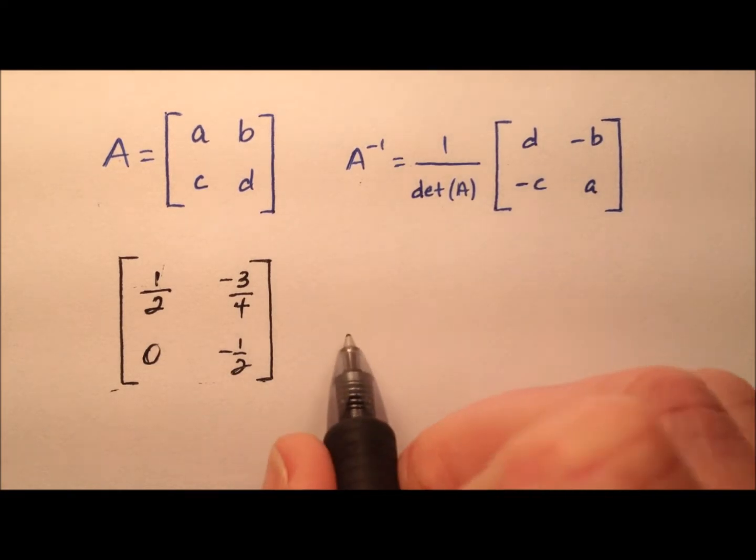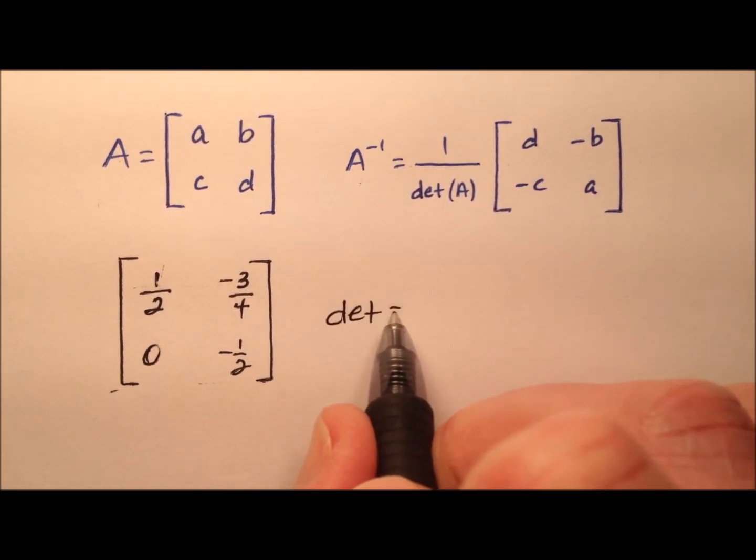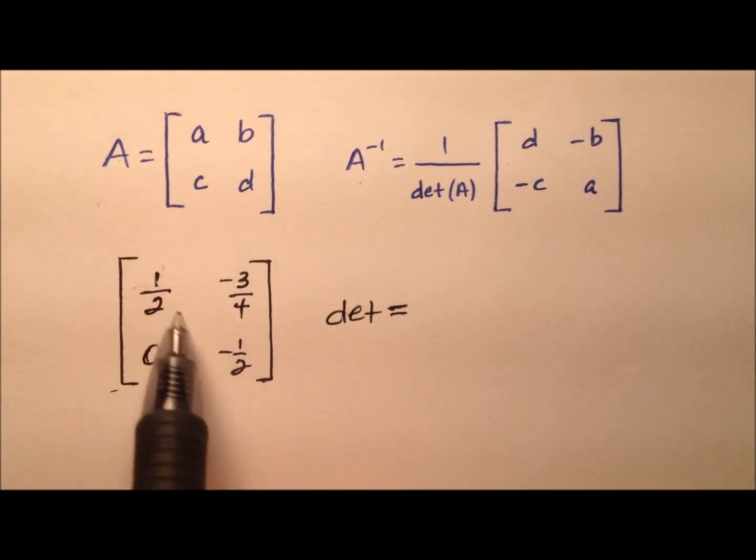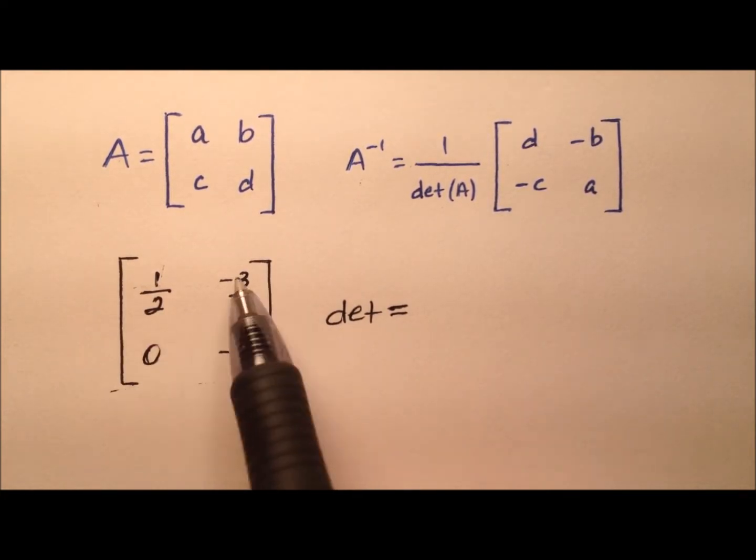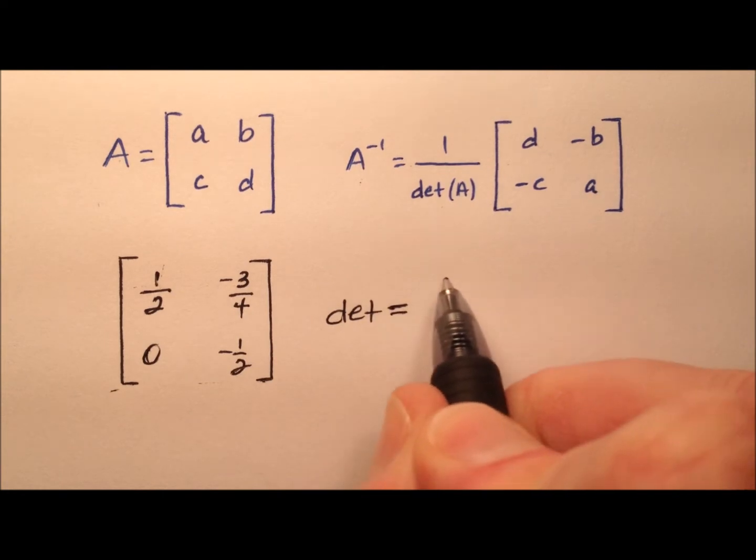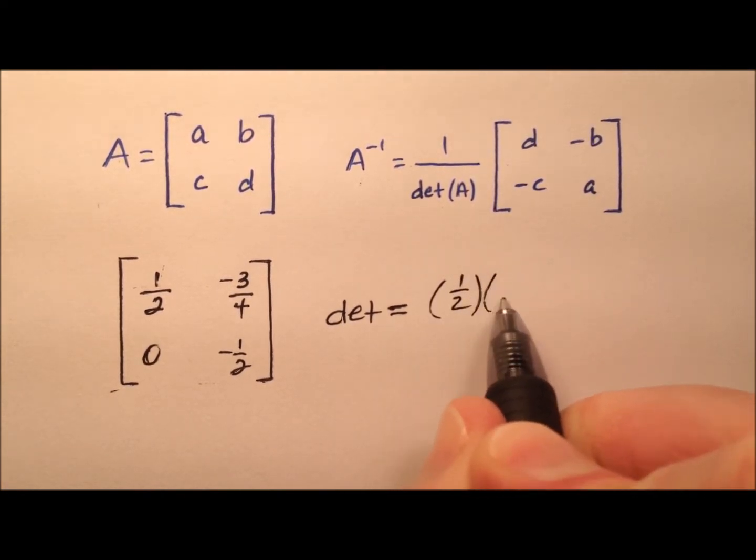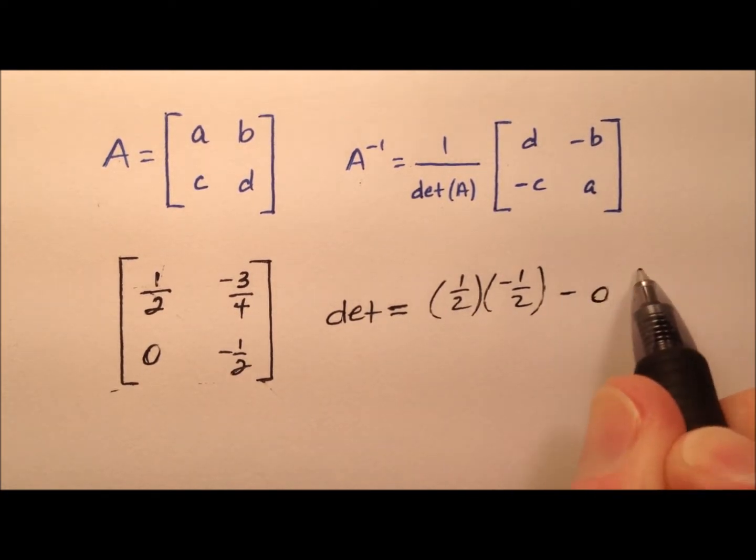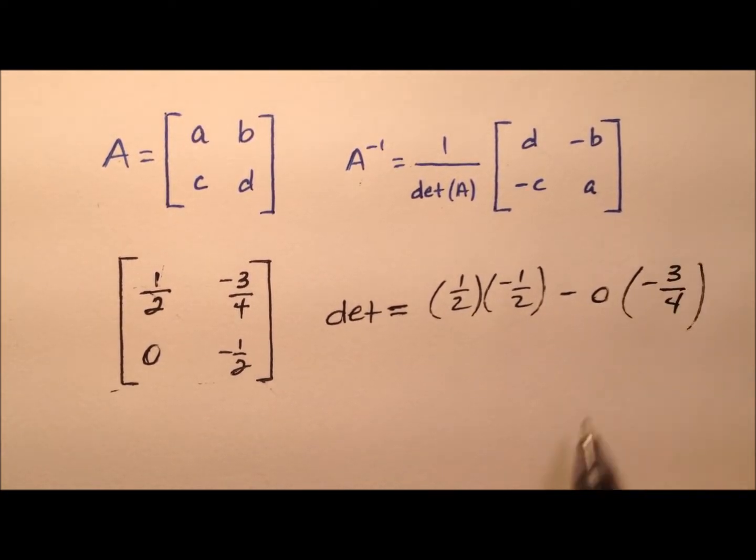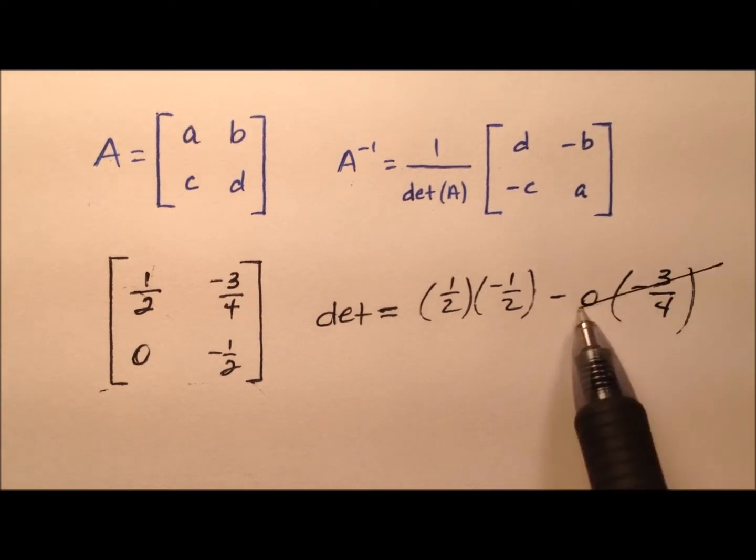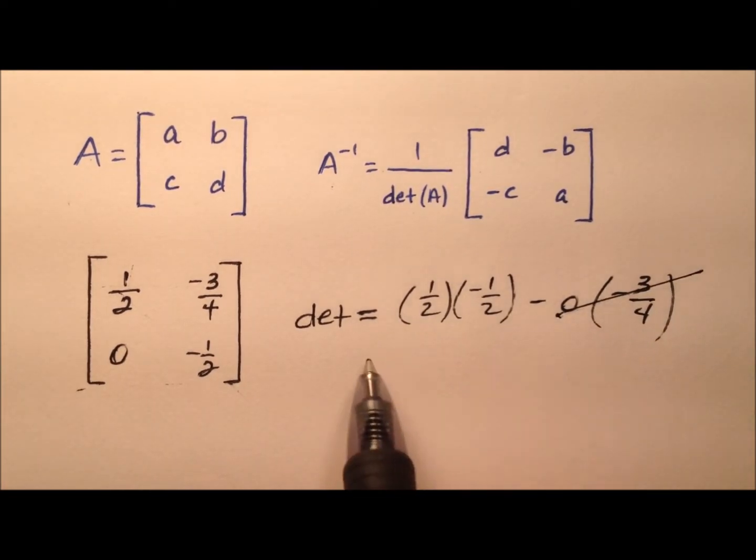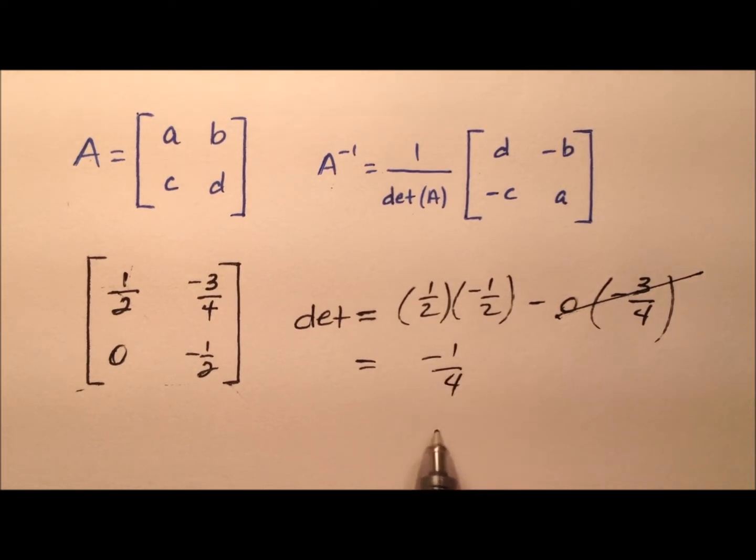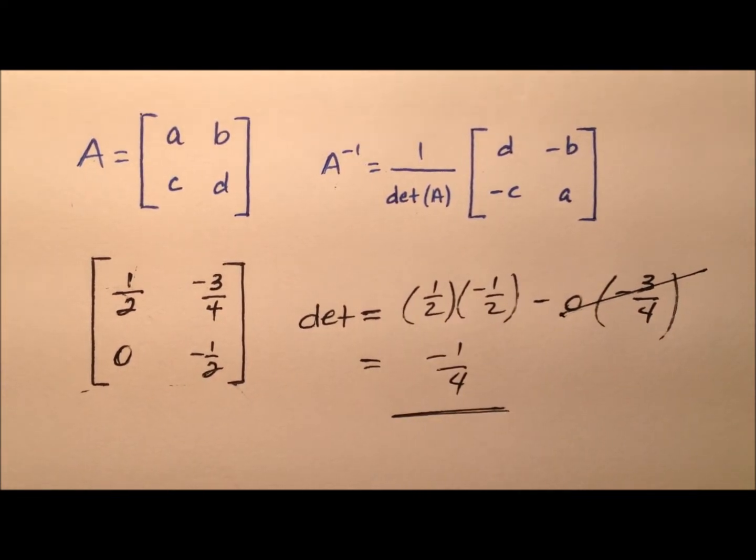We'll get to that here in a second. Let's start by finding the determinant of this matrix. The determinants are found by multiplying these entries and multiplying these entries and then subtracting. So we'll have positive 1/2 times negative 1/2, and that's these guys, and we'll subtract from that 0 times negative 3/4. Multiplication by 0 is really nice because those cancel. So what I'm left with is negative 1/4. That's our determinant.